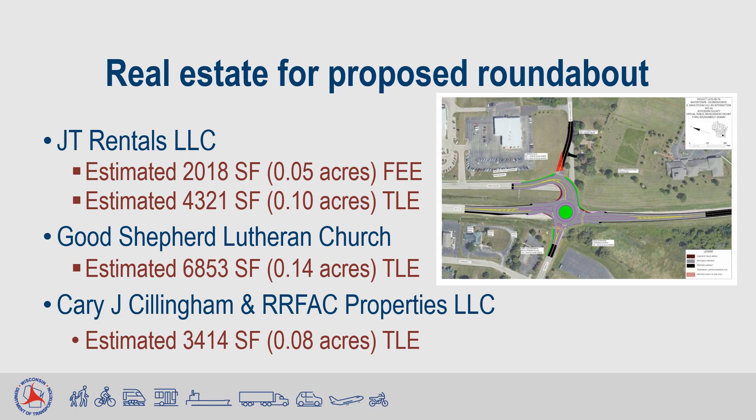Right-of-way will need to be purchased with this project. The permanent fee required is only in the northeast quadrant of the roundabout for the reconstruction of the intersection of Oak Hill Drive and the Frontage Road. 2,018 square feet or approximately 0.05 acres of permanent right-of-way will be required. 4,321 square feet or approximately 0.1 acres of temporary easement will be needed for grading purposes. In the southwest quadrant of the roundabout, 6,853 square feet or approximately 0.14 acres of temporary easement are needed.